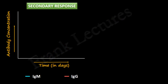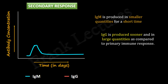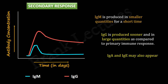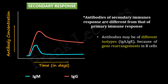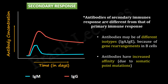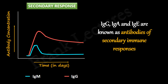In the secondary antibody response, IgM is again produced before IgG. But this time, IgM is produced in smaller quantities for a short period, and IgG is produced sooner compared to the primary immune response and in much larger quantities. These antibodies may also be accompanied by the appearance of IgA and IgE. The antibodies of the secondary immune response differ from those of the primary response, as antibodies of different isotypes may be secreted due to immunoglobulin gene rearrangements in B cells. These antibodies also have increased affinity towards the pathogen due to somatic point mutations in the immunoglobulin genes. IgG, IgA, and IgE are known as antibodies of secondary immune responses.